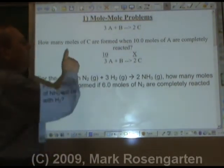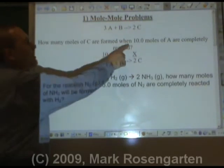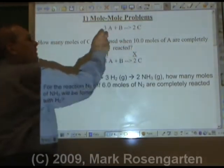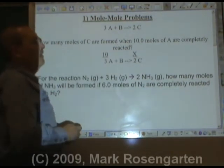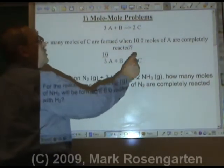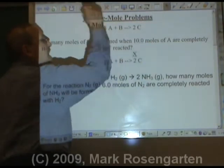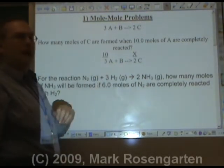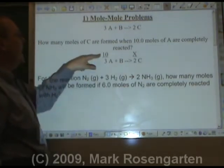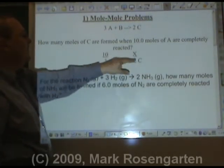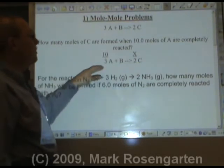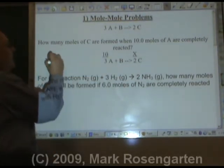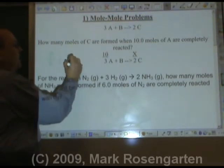For example, how many moles of C are formed when ten moles of A are completely reacted? Now what that's saying is that we have enough B to get the job done. We want to know how much C we're going to get if we react ten moles of A. So what you do is you use the coefficients of the balanced equation. Ten is to the three A as X is to the two C. Ten is to three as X is to two.